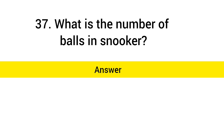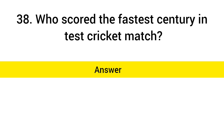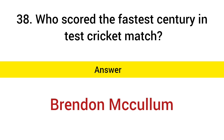What is the number of balls in snooker? Answer: 22. Who scored the fastest century in Test cricket? Answer: Brendon McCullum.